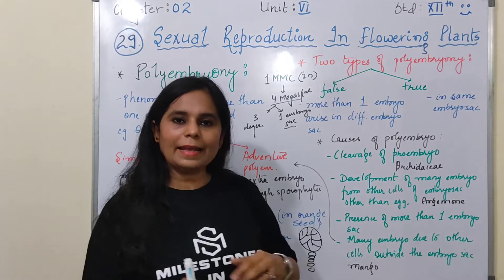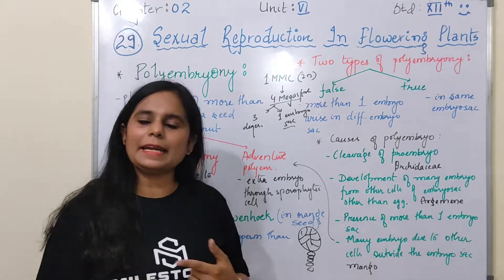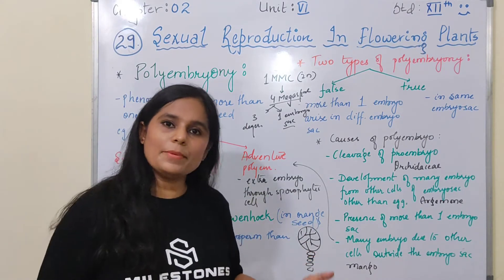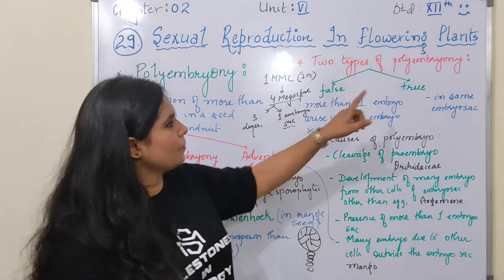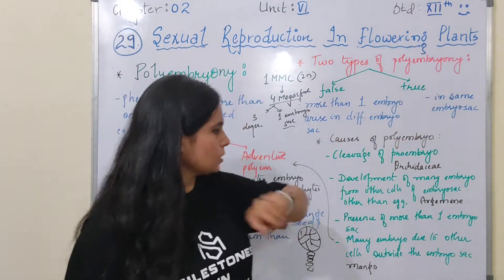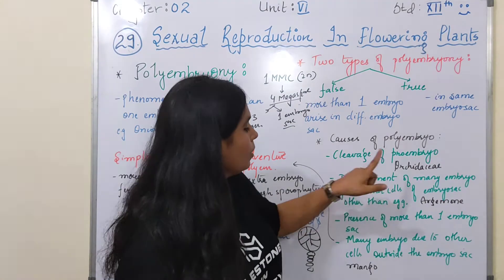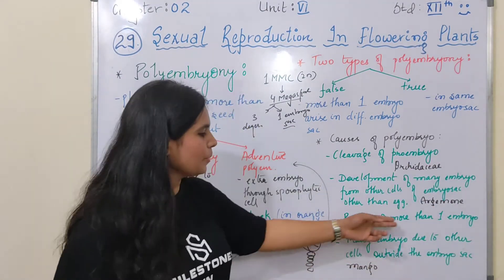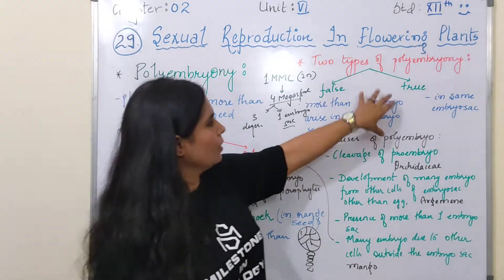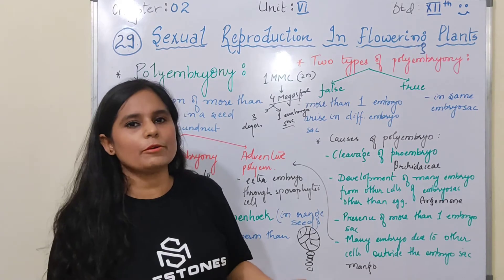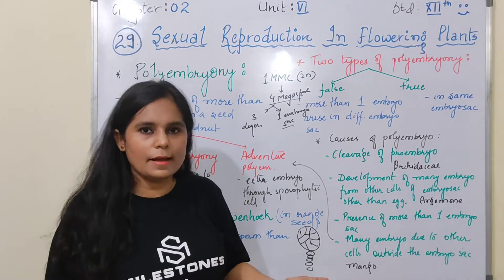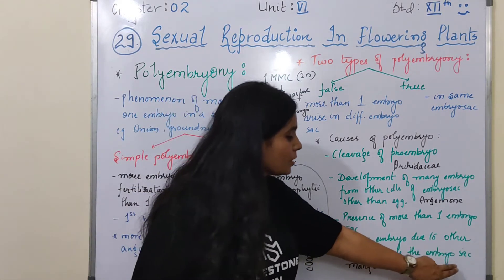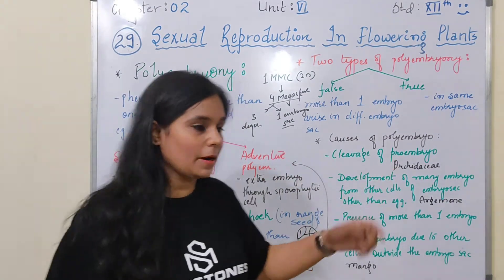The second cause is development of many embryos from other cells of the embryo sac other than the egg — such as antipodal cells and synergid cells. If any other cell forms an embryo, polyembryony can occur. This happens in the case of Argemone. The third cause is the presence of more than one embryo sac, which leads to the false polyembryony condition — more than one embryo sac means more than one embryo.